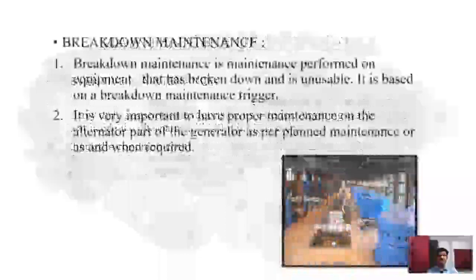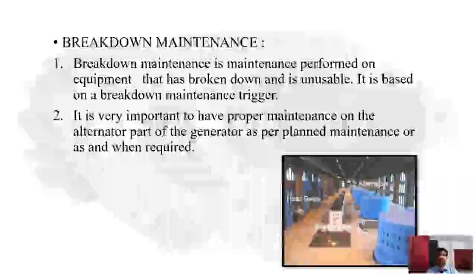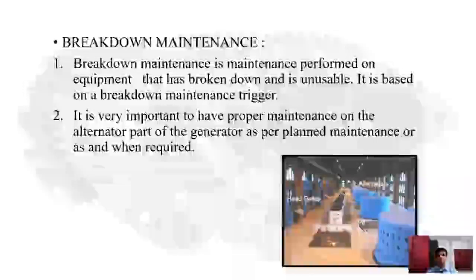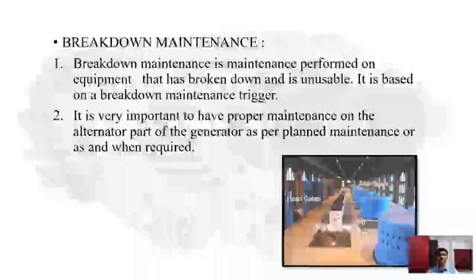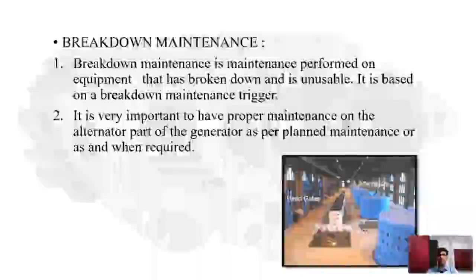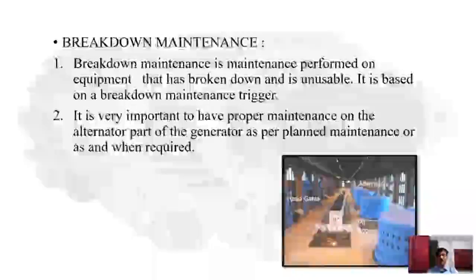In the next slide we can see breakdown maintenance. So what is the breakdown maintenance? Breakdown maintenance is a maintenance which is given to an electrical machine after its breakdown. This maintenance is performed on electrical equipment that has broken down and is unusable. It is based on a breakdown maintenance trigger. It is very important to have proper maintenance on the alternator part of the generator as per planned maintenance system or when required. Breakdown maintenance is given to the alternator after its breakdown when it is unusable.